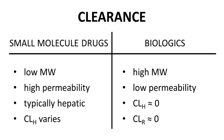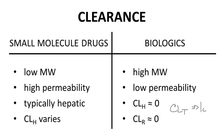Biologics, with their large size and low permeability, cannot enter hepatocytes and therefore do not undergo hepatic clearance. Interestingly, biologics are normally too large to be filtered by the kidneys, so renal clearance of the unchanged drug is also negligible. Therefore, the total clearance of biologics is very low.